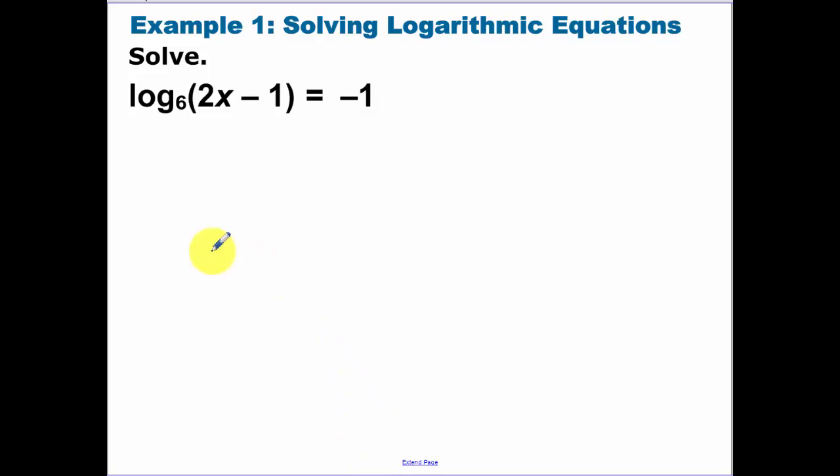Okay, so our first example. Notice how we have a logarithm equal to a number. So if you have just one logarithm, or a bunch of logarithms equal to a number, write it as an exponential. Remember, logs and exponentials kind of undo each other, they're inverses of each other. So we're writing this as an exponential.